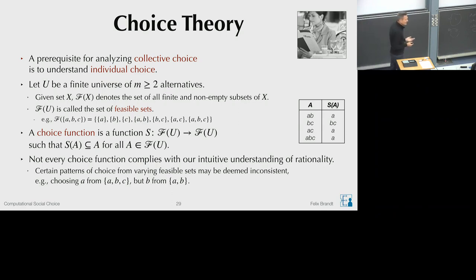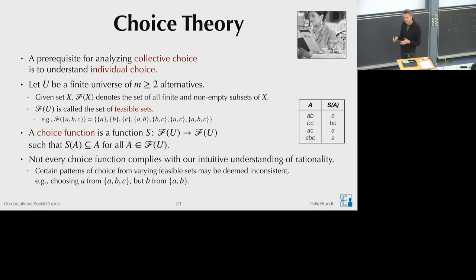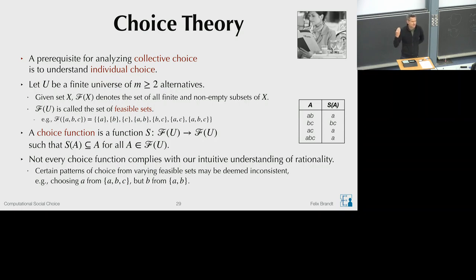Of course you can think of applications where this might make sense — for instance if the feasible set itself contains additional information about quality. But the basic assumption in choice theory is that all the information is contained in the alternatives themselves, and choices are menu-independent. You just choose something from the menu, but the menu itself doesn't give you useful information for your choice. We want to formalize this by defining axioms which rule out these kinds of choices.